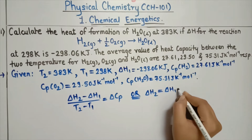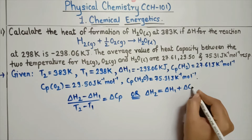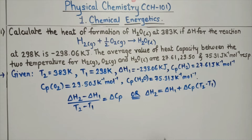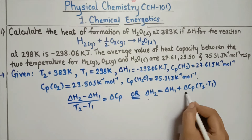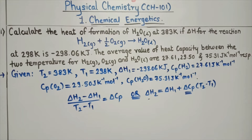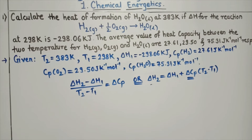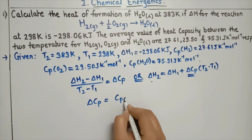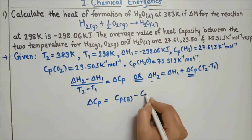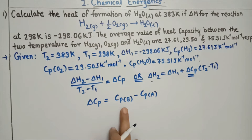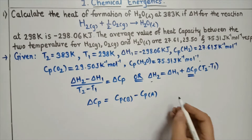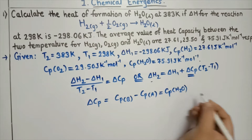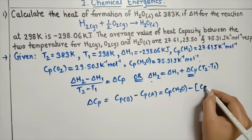Now we will find the value of delta Cp. Delta Cp equals Cp of H₂O minus Cp of H₂ plus half into Cp of O₂. There are two reactants so we add them, multiplying by the stoichiometric coefficient. Putting in values: Cp of H₂O is 75.31, minus 27.61, plus half into Cp of O₂ which is 29.50.